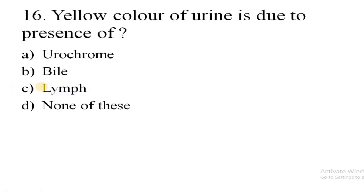Yellow color of urine is due to presence of? The correct answer is A, that is urochrome. It's a very important question, please remember this.